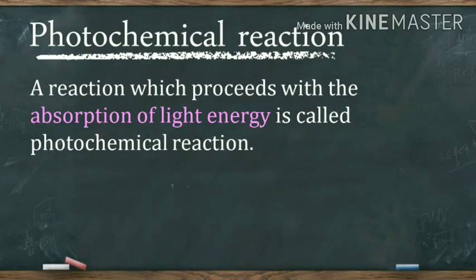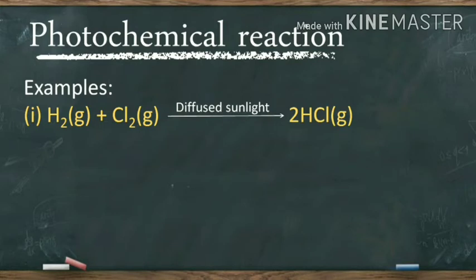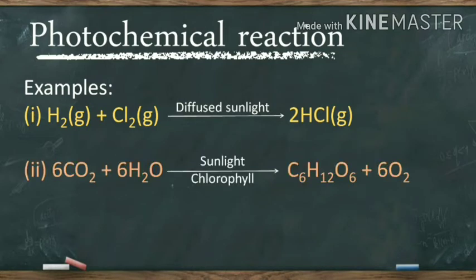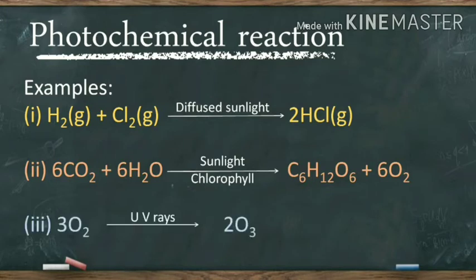The third type is the photochemical reaction. A photochemical reaction is a reaction which proceeds with the absorption of light energy. For example, when a gaseous mixture of hydrogen and chlorine is exposed to sunlight, hydrogen chloride is formed. Photosynthesis in plants also takes place in the presence of sunlight — plants absorb sunlight to form glucose and oxygen from carbon dioxide and water. Ozone is also formed from oxygen when UV rays fall on oxygen molecules.